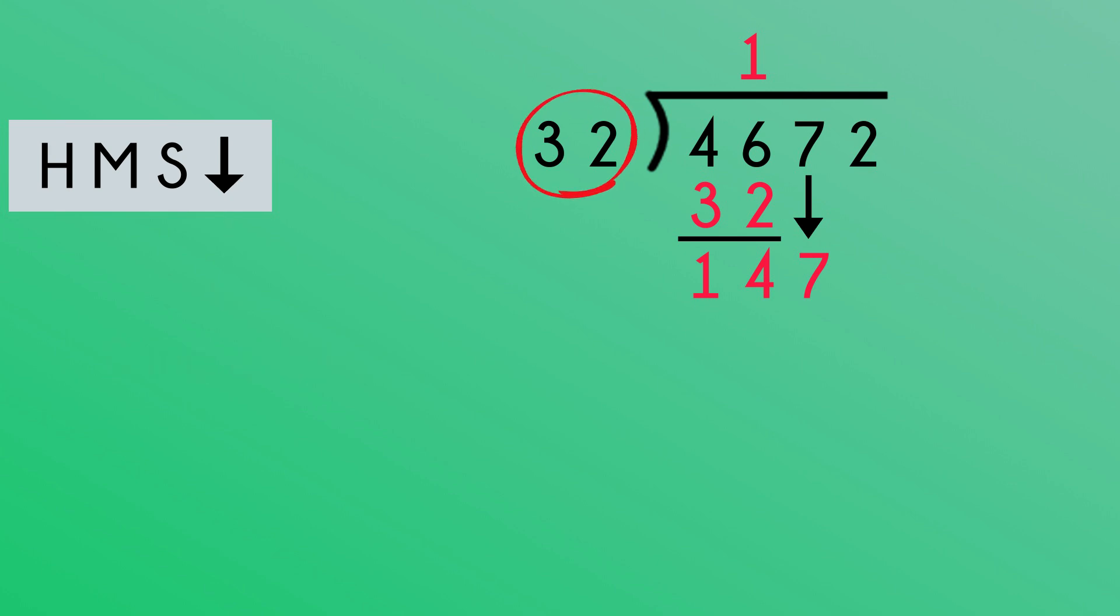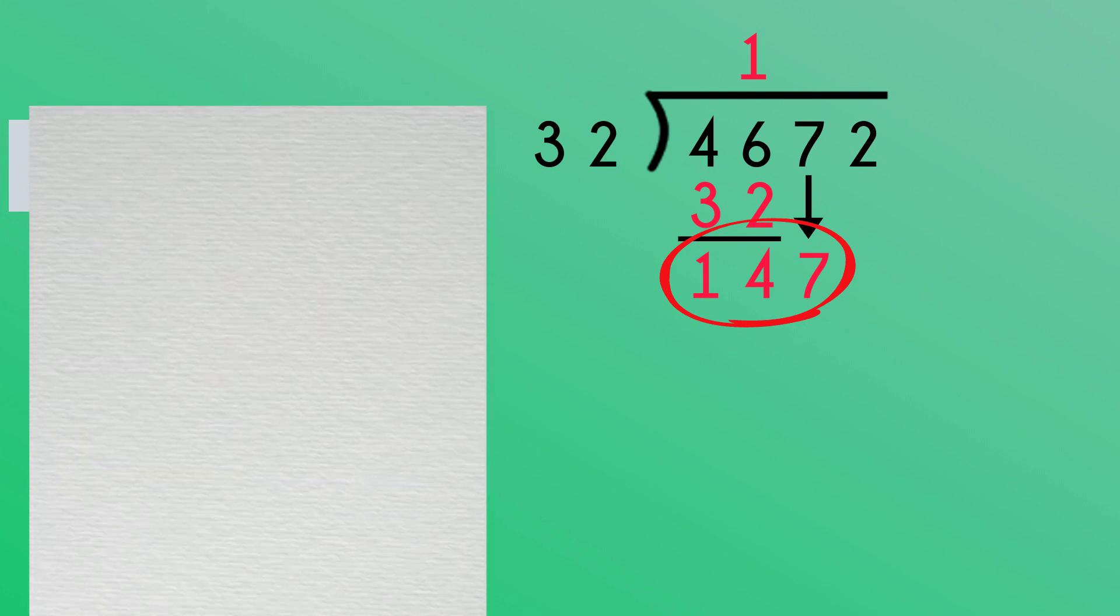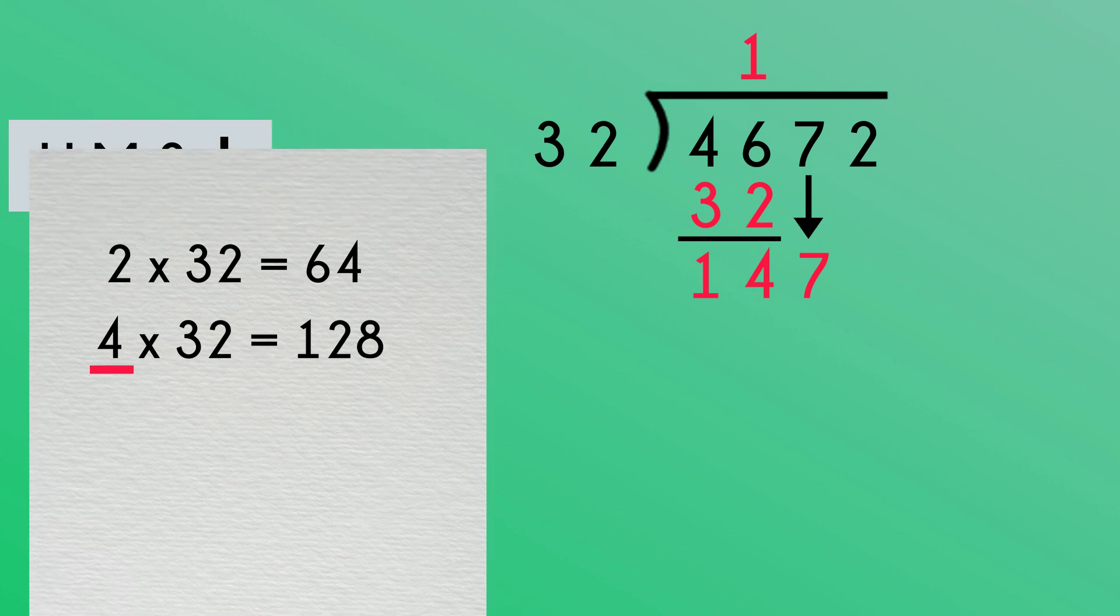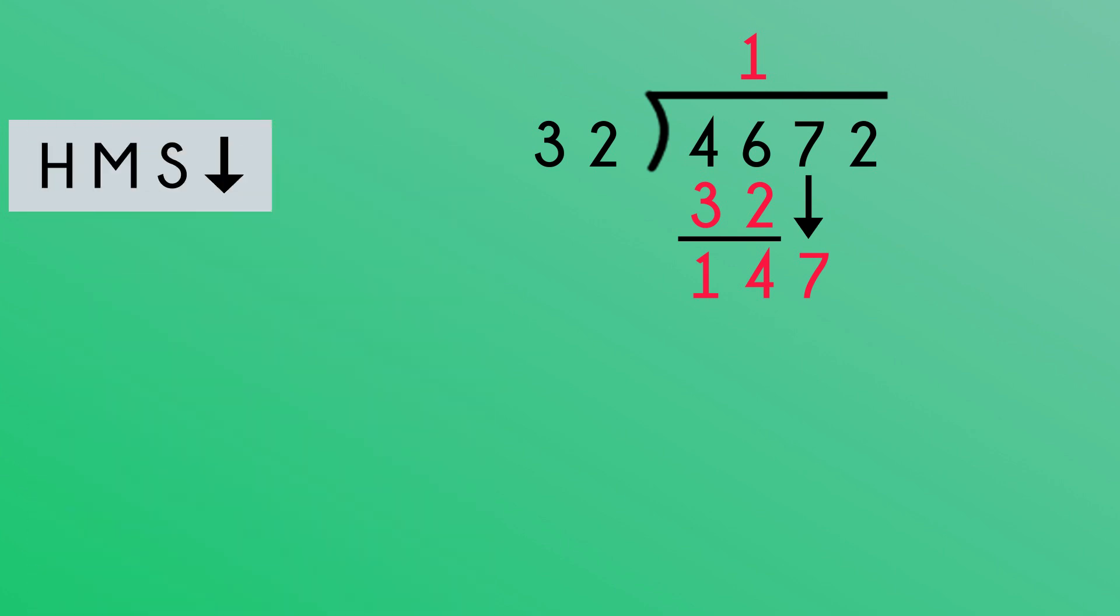How many 32s in 147? I'll use my scrap paper to help me here. I know that 2 lots of 32 is 64. That means 4 lots of 32 must be 128. 32 will fit into 147 four times. We write the 4 at the top. Now we multiply. 32 times 4 equals 128. And then we subtract. 147 subtract 128 is 19.